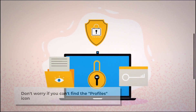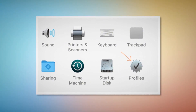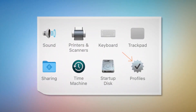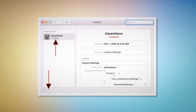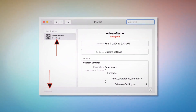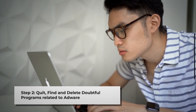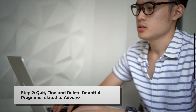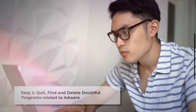But if you can find the Profiles icon, as shown in the screenshot, click on it. Once you click on the Profiles icon, you'll land on a window like the one shown in the screenshot. Select the unknown or doubtful profile, then click the minus button to remove the profile. If you can't find any profiles icon as mentioned in step one, just follow step two directly.